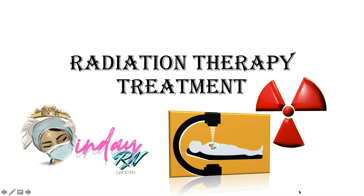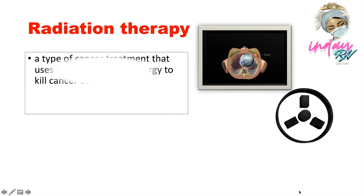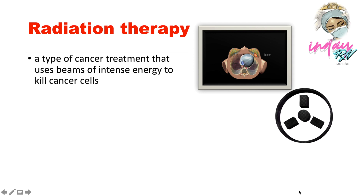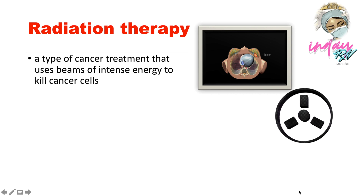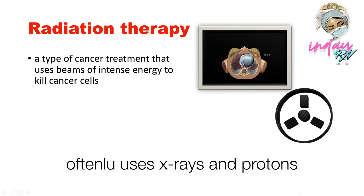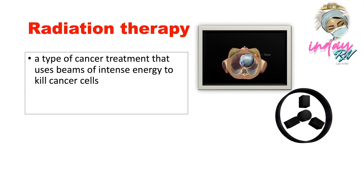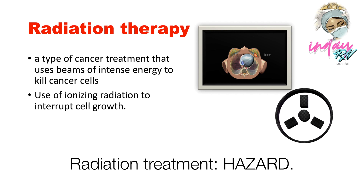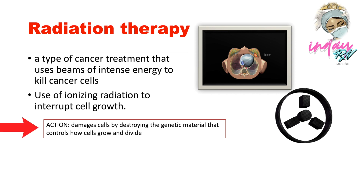Click that notification bell so that you're going to be updated on my uploads. Radiation therapy is a type of cancer treatment that uses beams of intense energy to kill cancer cells. It most often uses x-rays, but protons and other types of energy can also be used. Radiation treatment uses ionizing radiation to interrupt cell growth by destroying the genetic material that controls how cells grow and divide.